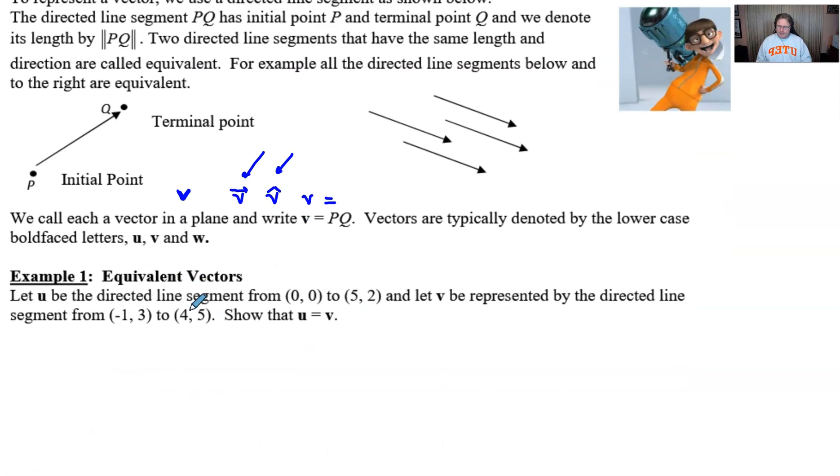All right, let's look at our first example here. It says, let U be the directed line segment from the point (0, 0) to the point (5, 2). And let V be represented by the directed line segment from (-1, 3) to (4, 5). We want to show that vector U is equivalent to vector V. Now, in order to pull that off, you have to go back to your ideas of magnitude and direction. We have to make sure that they have the same length and the same direction.